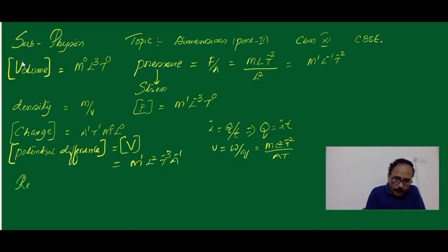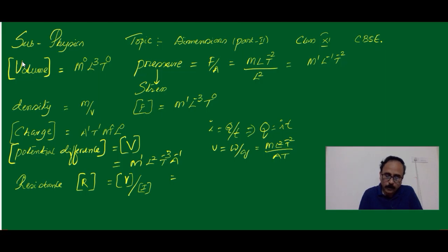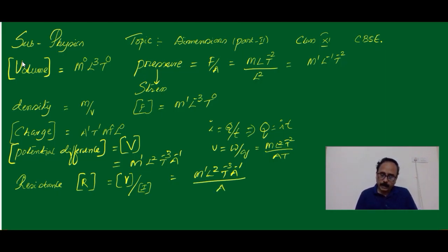Now let's write for resistance. Resistance is nothing but potential divided by the current. So the Dimensional Formula of V divided by the Dimensional Formula of I gives us M1, L2, T-3 and A-1, and the Dimensional Formula for current is A. So finally it will be M1, L2, T-3 and A-2.